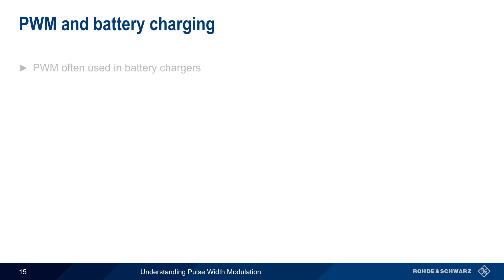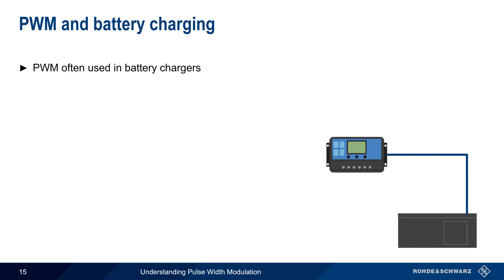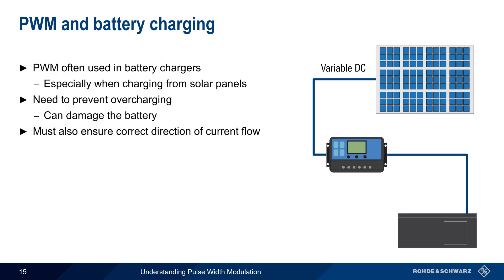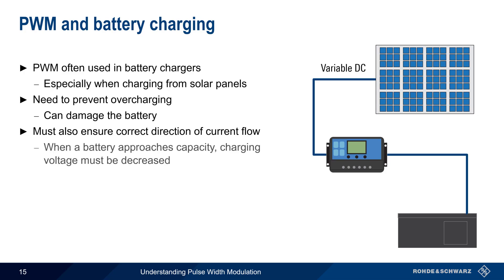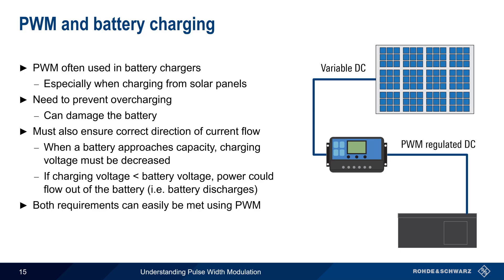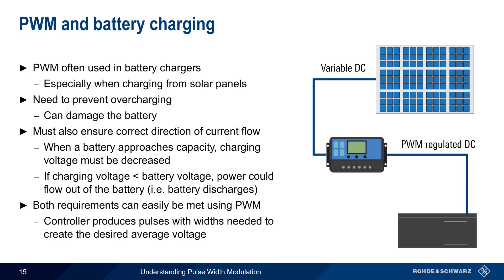Another power-related application of pulse width modulation is battery chargers, or charge controllers, and this is particularly common when charging from solar panels. There are two general requirements when charging batteries. The first is to prevent overcharging, as this can damage the battery. The second is to ensure the correct direction of current flow — when charging a battery, the charging voltage must be reduced as the battery approaches capacity, but if the charging voltage were to become less than the battery voltage, current could flow out of the battery instead of into it. Both of these requirements can easily be met with pulse width modulation, as the controller simply produces pulses with the widths necessary to create the desired average voltage.